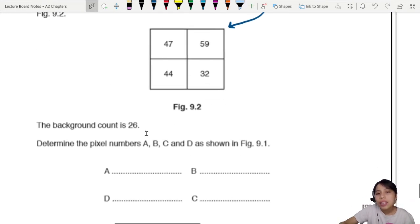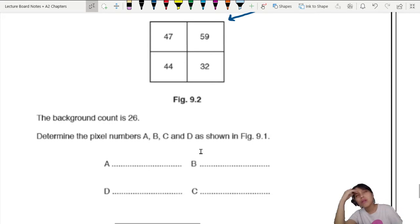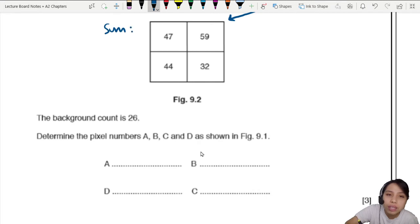And this is the result. Now what do they want? The background count is 26. Determine the pixel number, the original pixel number of ABCD. You got to remember how does the computer process this data? This is already your sum of readings, all the detector readings added together from each direction.